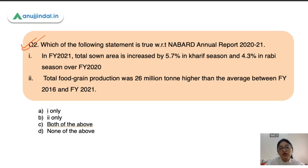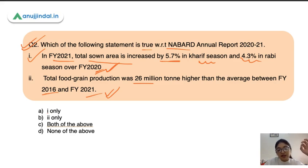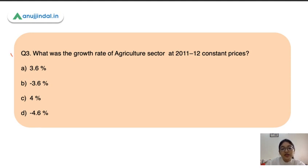The next question asks which statement is true with respect to the NABARD annual report 2021. First statement: in financial year 2021, the total sown area increased by 5.7 percent in the Kharif season and 4.3 percent in the Rabi season compared to the previous year — this is correct. Second statement: the total food grain production was 26 million ton higher than the average for financial years 2016 to 2021 — this is also correct. So option C is the right answer.